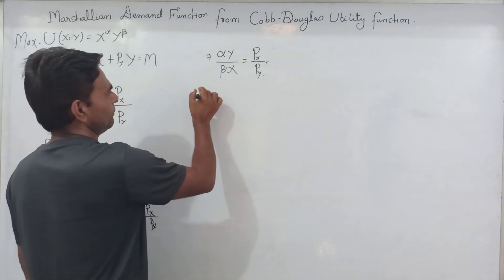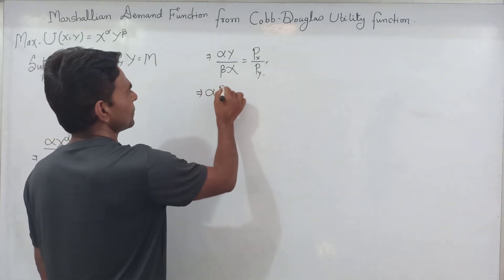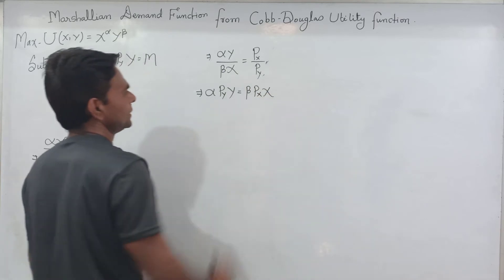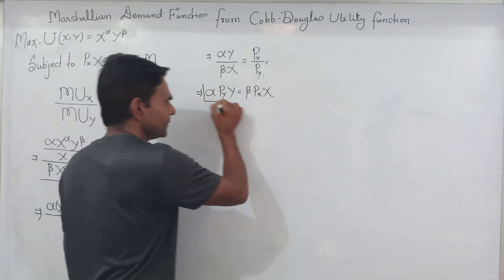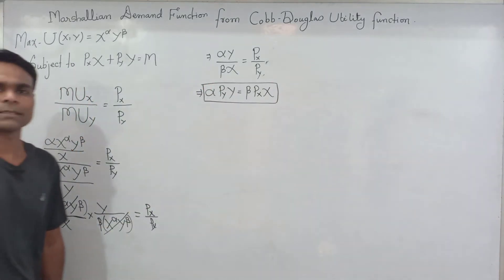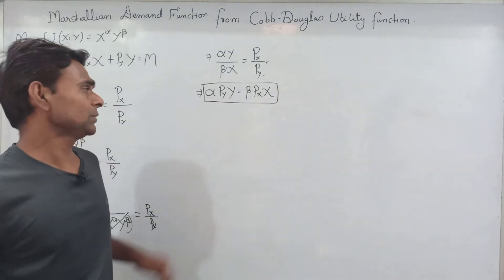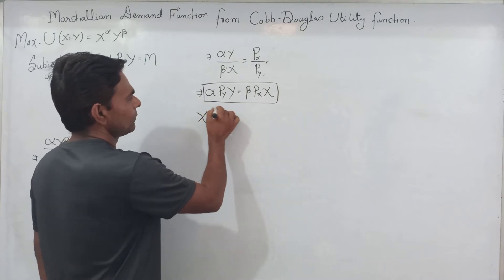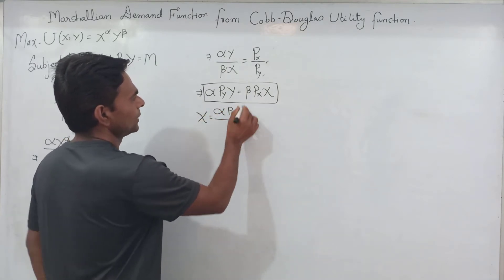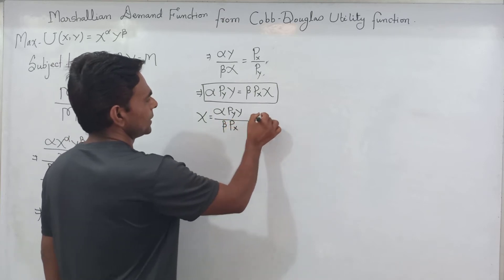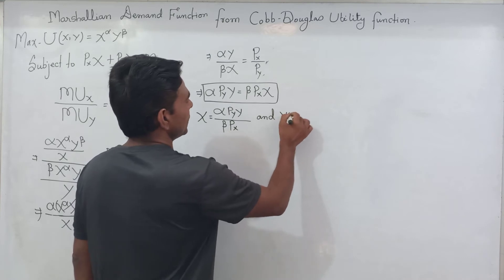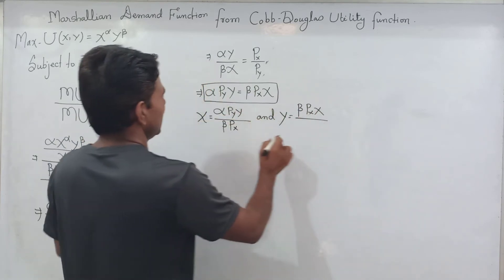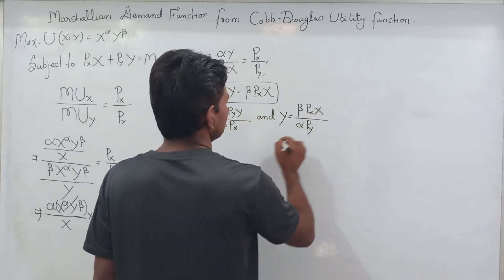By cross multiplication: alpha times Py times y equals beta times Px times x. From this equation we can express x as: x equals (alpha times Py times y) divided by (beta times Px), and y equals (beta times Px times x) divided by (alpha times Py).